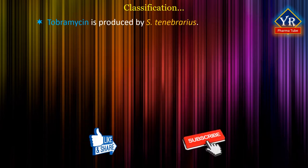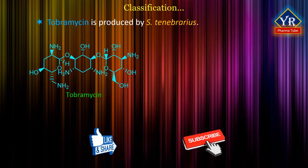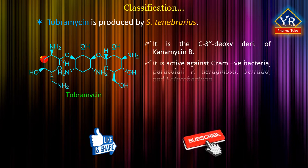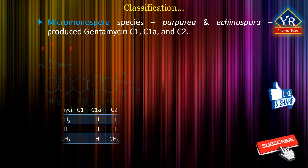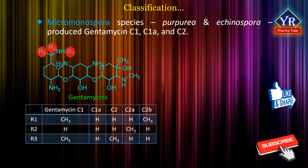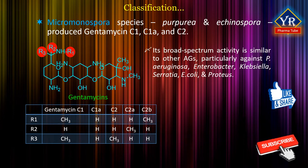Tobramycin is produced by Streptomyces tenebrarius. It is the C3-deoxy derivative of kanamycin B. It is active against many serious gram-negative bacteria, particularly Pseudomonas aeruginosa, Serratia and Enterobacteria. Two Micromonospora species, Purpurea and Echinospora, produce the gentamicin C complex, a roughly equal mixture of three closely related antibiotics designated as gentamicin C1, C1A and C2. Its broad spectrum is similar to that of other aminoglycosides.